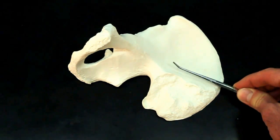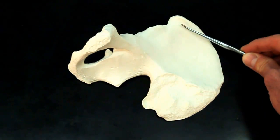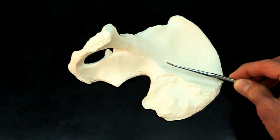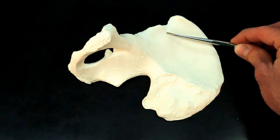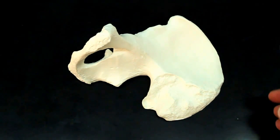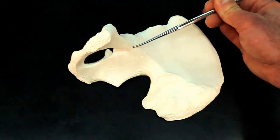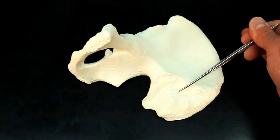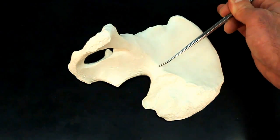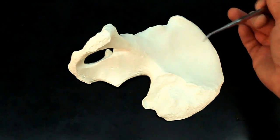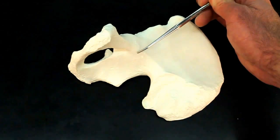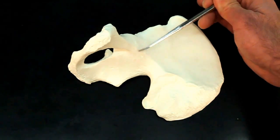This shallow indent right here is going to be the iliac fossa, which then moves us to this ridge right here, going from the roughness you see on the outside here, down into here, to the pubis. This ridge is called the arcuate line.